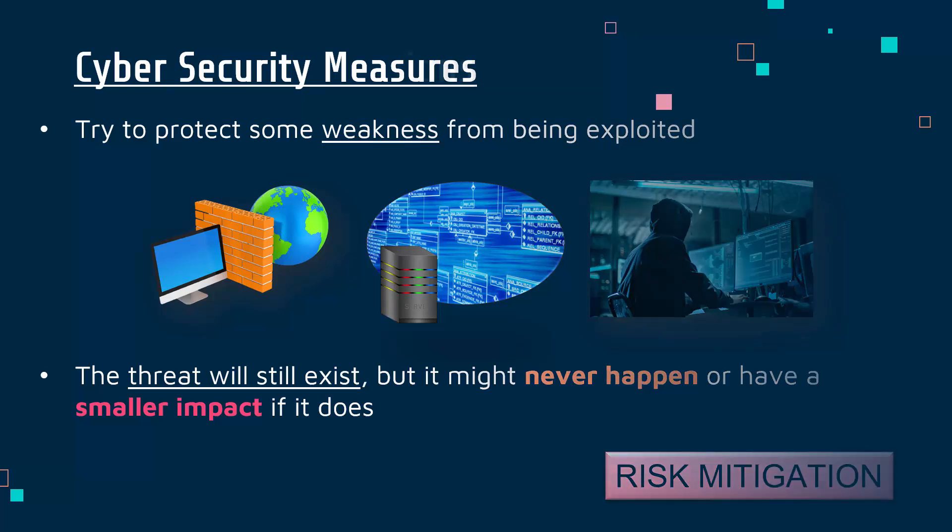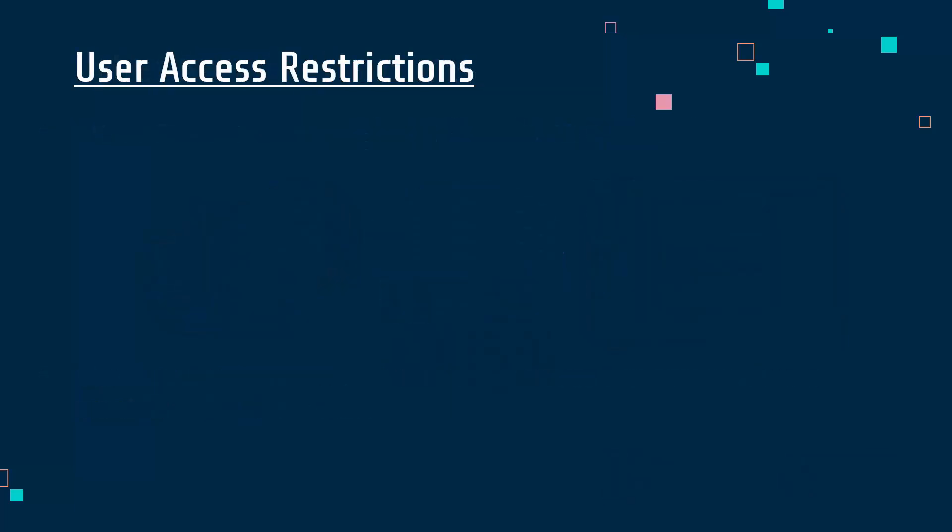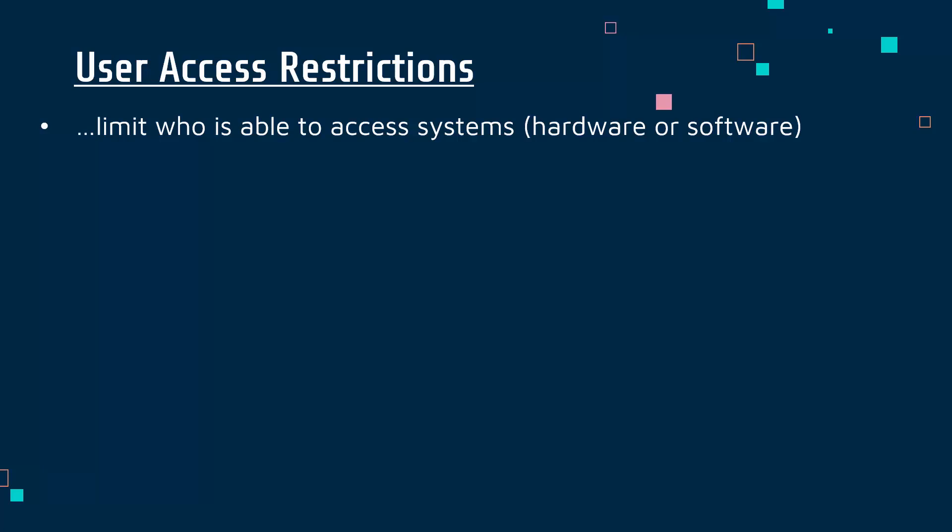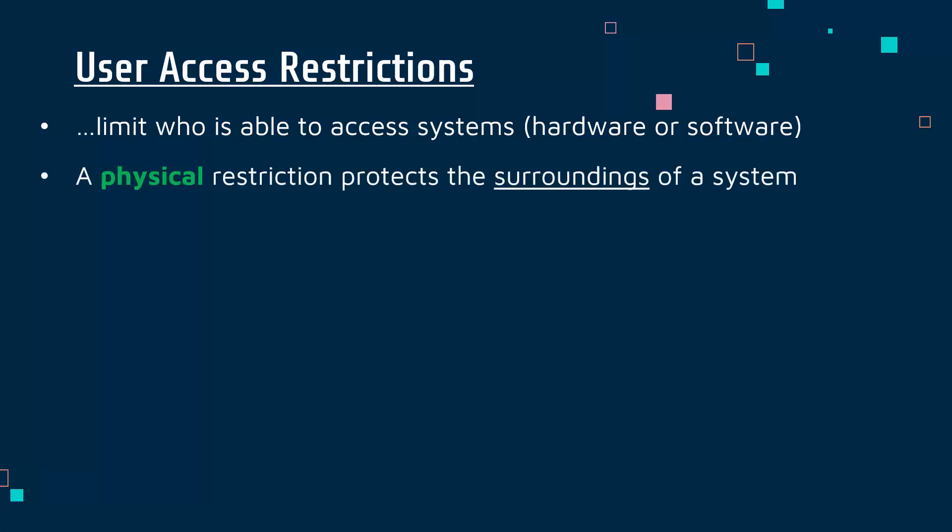This video and the next video are looking specifically at user access restrictions, which are measures we put in place that limit who is able to access our systems. By systems, we mean both hardware and software — so we've got both physical systems and also the software running on them.